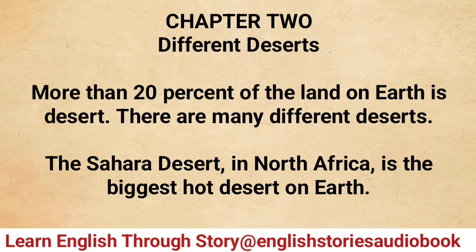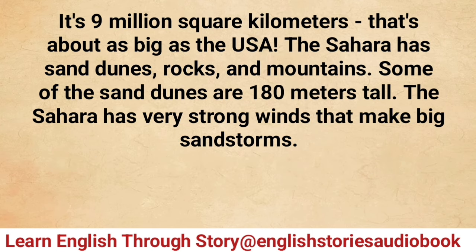Chapter two: Different deserts. More than 20% of the land on Earth is desert. There are many different deserts. The Sahara Desert in North Africa is the biggest hot desert on Earth. It's nine million square kilometers — that's about as big as the USA.